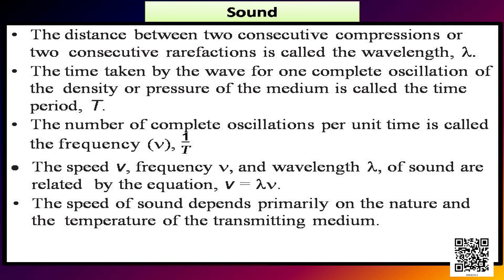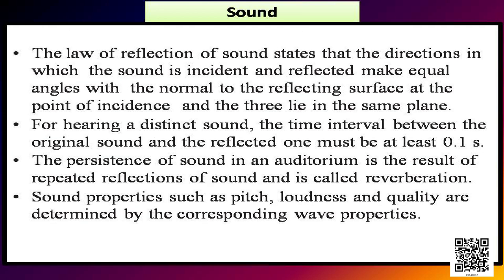The distance between two consecutive compressions or two consecutive rare fractions is called the wavelength lambda. The time taken by the wave for one complete oscillation of the density or pressure of the medium is called the time period T. The number of complete oscillations per unit time is called the frequency and it is equal to 1 by T. The speed, frequency and wavelength of sound are related by the equation speed is equal to wavelength into frequency. The speed of sound depends primarily on the nature and the temperature of the transmitting medium. The law of reflection of sound states that the directions in which the sound is incident and reflected make equal angles with the normal to the reflecting surface and the three lie in the same plane.